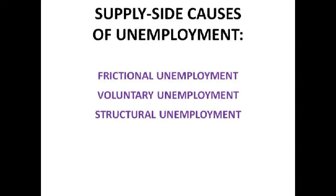Moving on to types you may recognise from GCSE: frictional, voluntary, and structural unemployment. Frictional unemployment — also known as search unemployment — is when people move between jobs. For example, if I was milking cows and decided I wanted to become an accountant, there would be a period where I'm not working because I need to acquire the qualifications to become an accountant. That time between jobs is frictional unemployment.